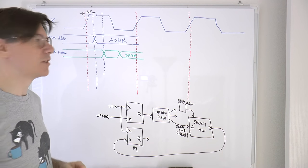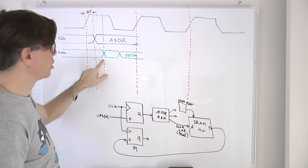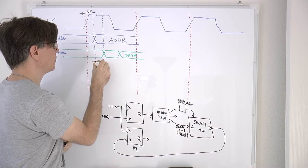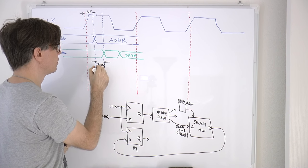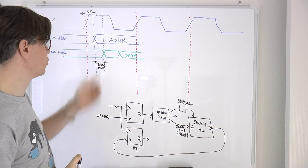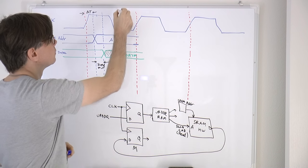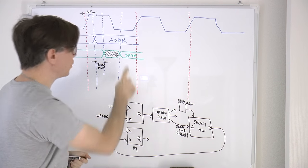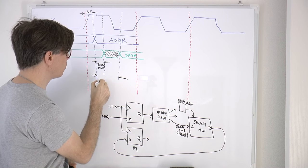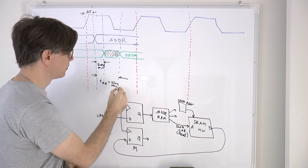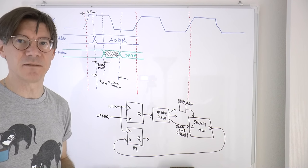Looking at the datasheet for the read cycle, between the time that the address changes and the time the SRAM data goes away is the hold time — the amount of time the SRAM keeps its output before noticing the address has changed. This is two nanoseconds minimum. After that, the data is basically invalid until the data corresponding to the input address becomes valid. That time on the datasheet is called TAA, and that's 10 nanoseconds max. That's pretty much why this is called 10 nanosecond memory.